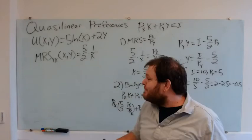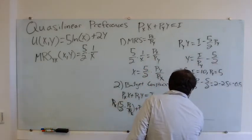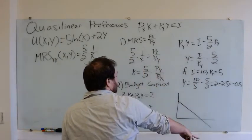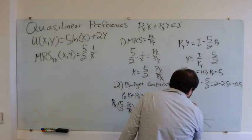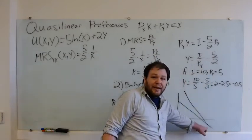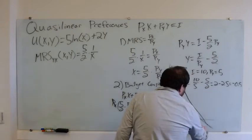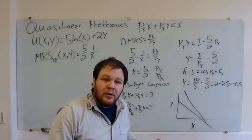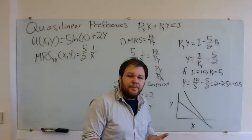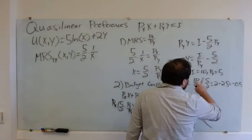The problem is the math doesn't know that's not possible. What the math is doing is saying I've got some budget constraint, and then I've got some indifference curve that's tangent to the budget constraint at some point. The only problem is that point happens to be unattainable — it's unaffordable because it requires buying a negative amount of y. So this isn't a real interior solution; we need to consider the corner solutions.